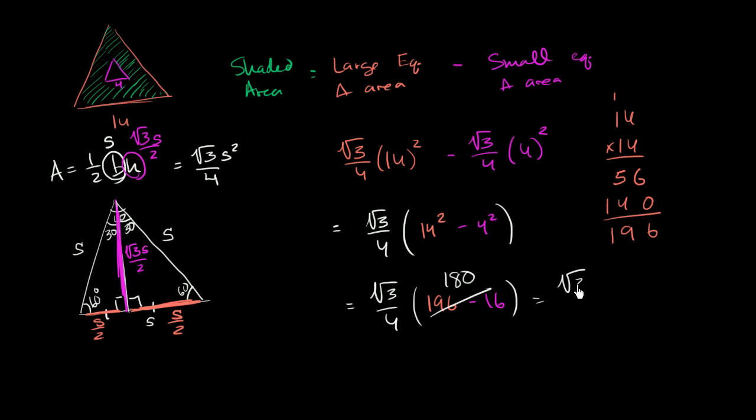So this right over here is equal to 180. And 180 is divisible by 4. So this is going to be equal to the square root of 3 times, let's see, 180 divided by 4 is going to be 45. So it's going to be 45 square roots of 3.